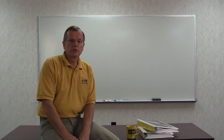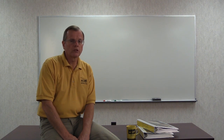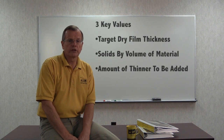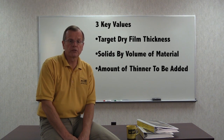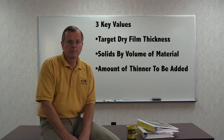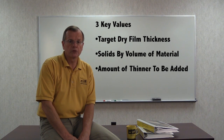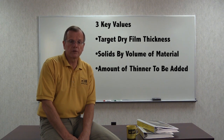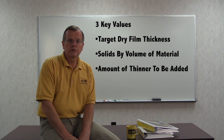In order to determine the target wet film thickness, you need three values. The first is the target dry film thickness, or DFT, of the coating. Second, the solids by volume of the material being applied. And third, the amount of thinner that will be added to the coating.